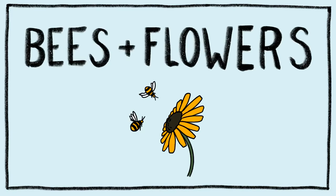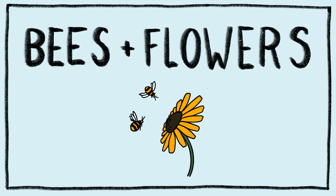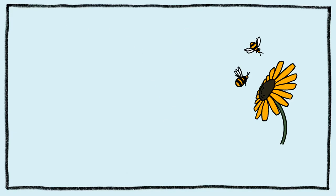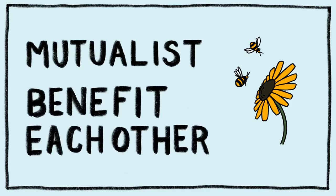Next are bees and flowers. This group is a group of mutualists, which means they mutually benefit each other. Bees need flowers for their nectar to make food, and flowers want to be pollinated by the bees.